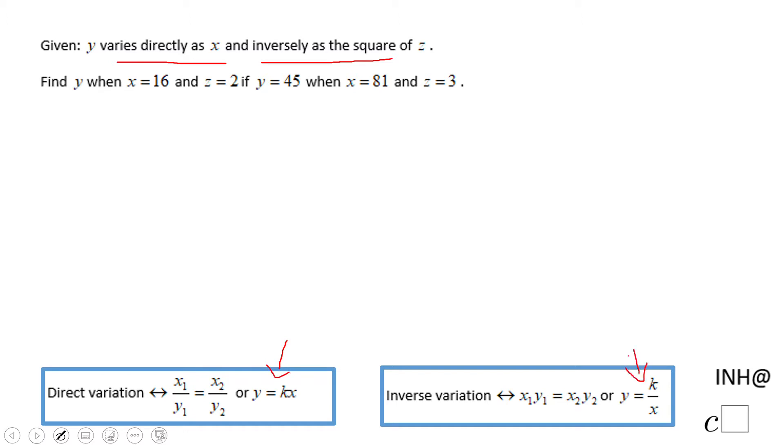We're going to write the equation that models this problem. y varies directly as x, so that is this part, and inversely as square of z. That is the second part. So this is the equation that models the problem, and now we can go to the problem we have here.